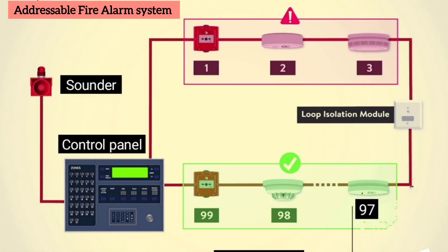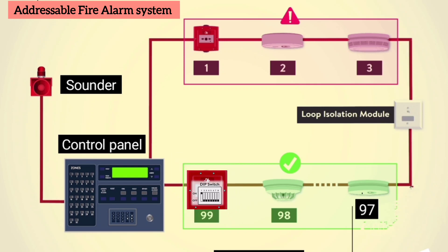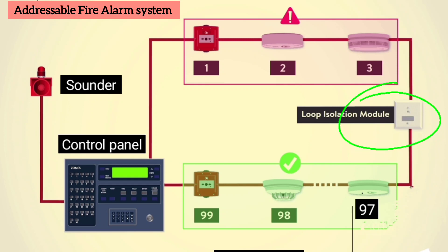Addressable fire alarm system. The detection principle of an addressable system is the same as a conventional system, except that each detector is given a set address, usually by means of a DIP switch, and the control panel can then determine exactly which detector or call point has initiated the alarm. The detection circuit is wired as a loop and up to 100 to 160 devices may be connected to each loop. It is common for the loop to be fitted with a loop isolation module so that the loop is sectioned, in order to ensure that a short circuit or single fault will only cause the loss of a small part of the system, allowing the rest of the system to function normally.